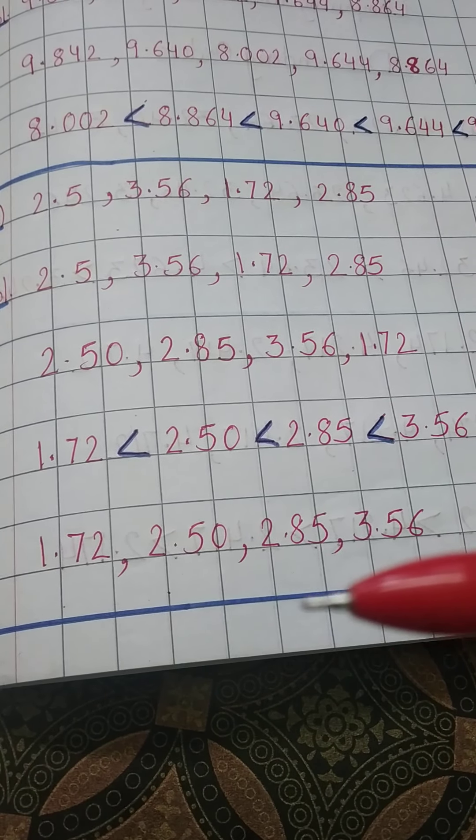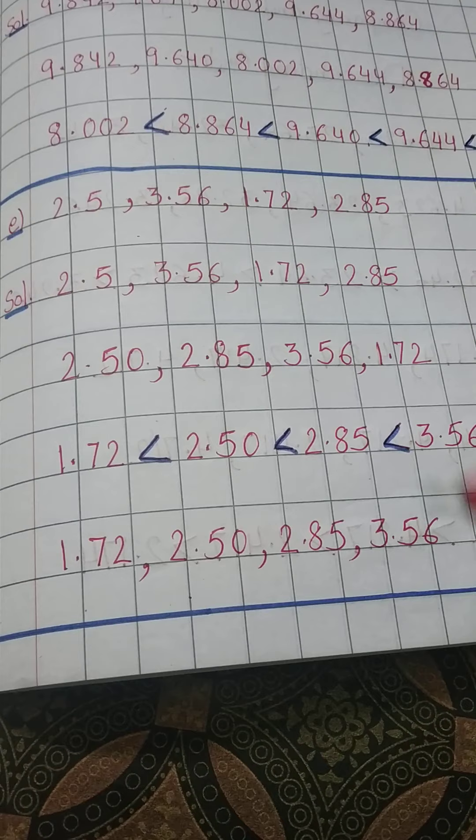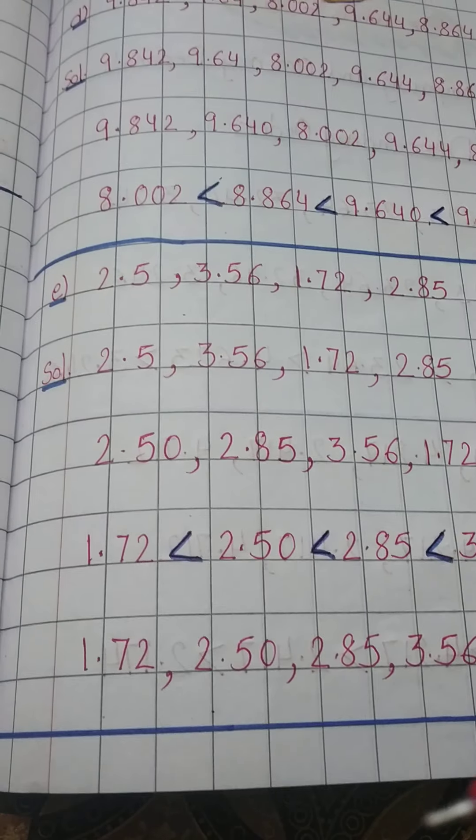And after this we can write in comma form also: 1.72, 2.50, 2.85, and 3.56. This is the ascending order of these decimal numbers.